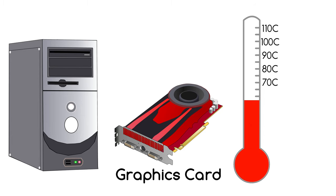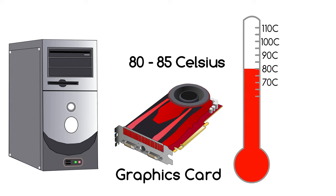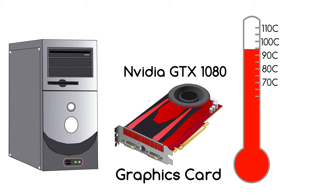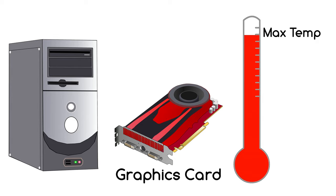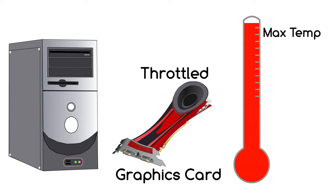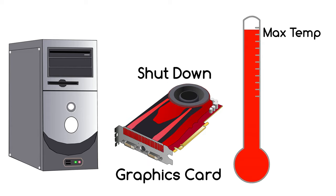As for AMD graphics cards, information on their temperature limits isn't so widely available. But for most graphics cards — AMD or Nvidia — if they're running at 80 to 85 degrees Celsius or below the card will work perfectly fine. Some will be okay in the 90s, such as the GTX 1080 from Nvidia, and some will be okay above that like the RX 5700 XT from AMD. If any graphics card reaches over its temperature limit its performance will be throttled, and if the temperature continues to rise the computer will shut down to prevent any damage.